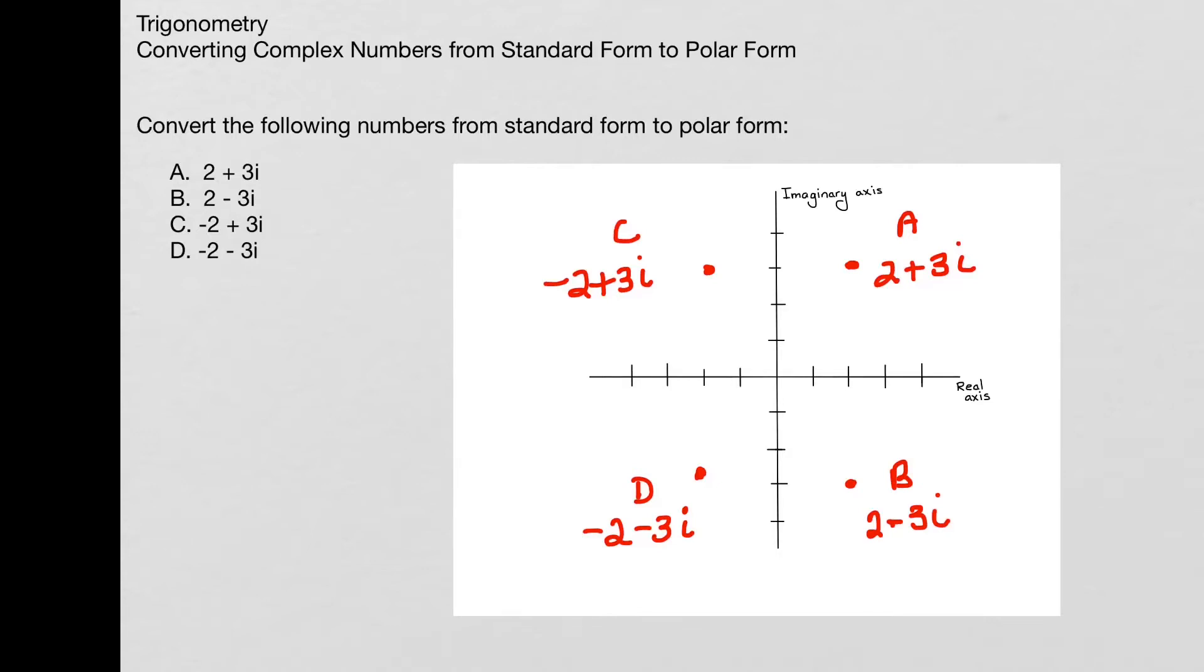I'm going to start with A. This is the simplest because it's quadrant 1. So I have 2 plus 3i, and I need to find R, and I need to find theta. Let's start with R. I'm going to square the 2 and square the 3, add them together and take the square root, and that gives me square root of 13.